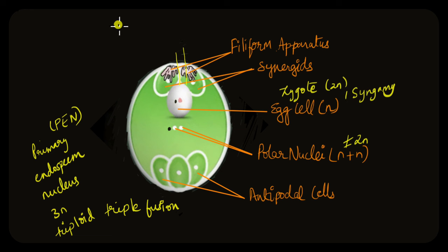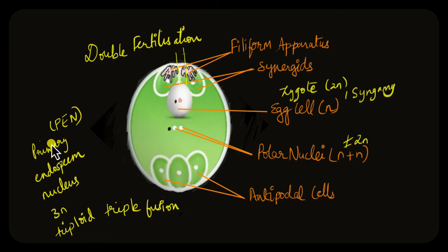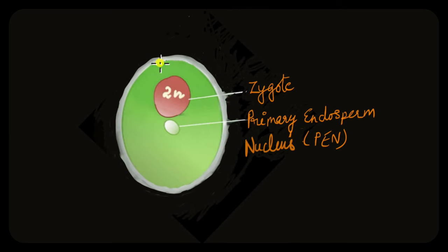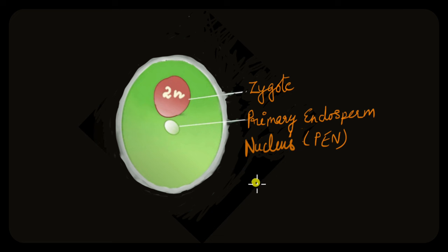Because there are two fertilization or fusion processes happening, this entire process is called double fertilization. After fertilization has occurred, the antipodal cells and synergids degenerate because they have served their purpose. Once the zygote and the PEN have formed, the PEN first begins to develop, because its main role is to provide nutrition to the developing zygote. Before the zygote can develop into an embryo — the future plant — it needs a lot of energy and nutrition, so the primary endosperm nucleus begins to divide rapidly.